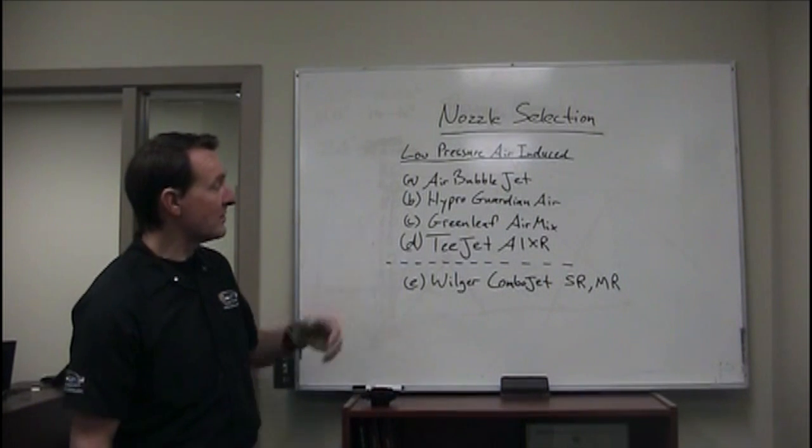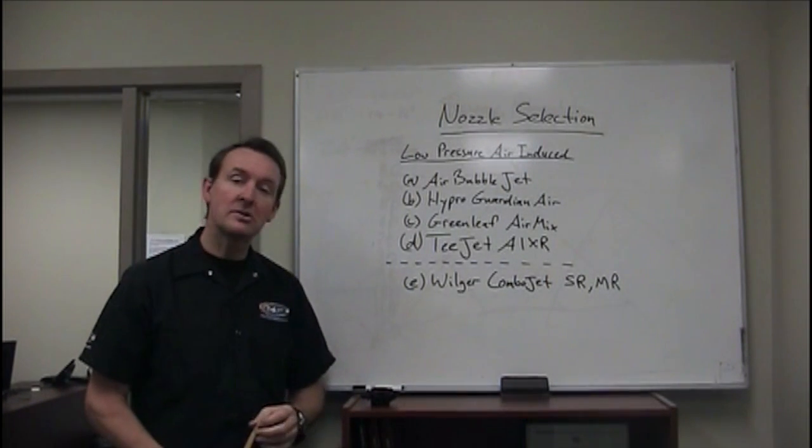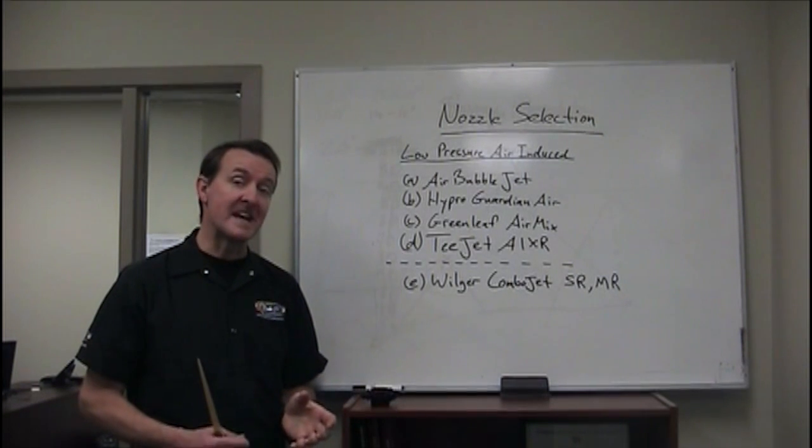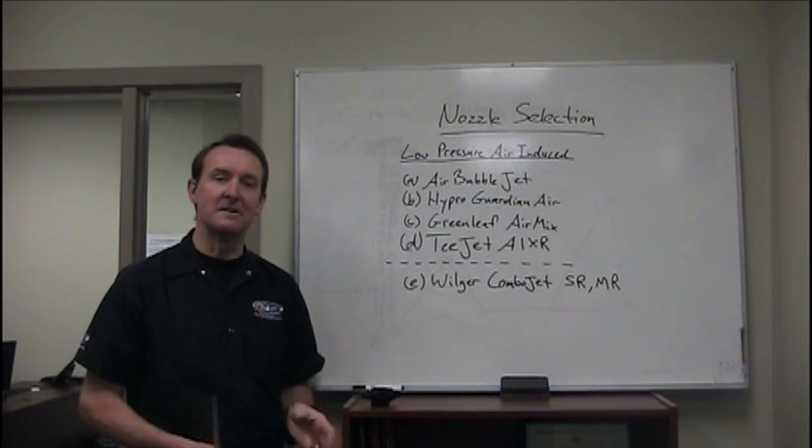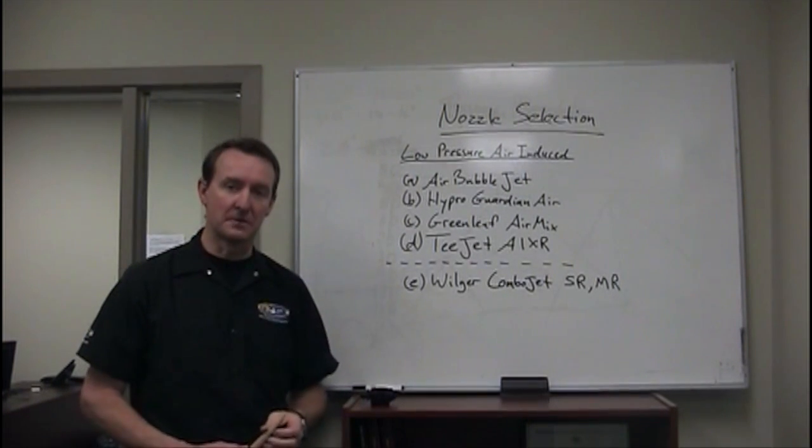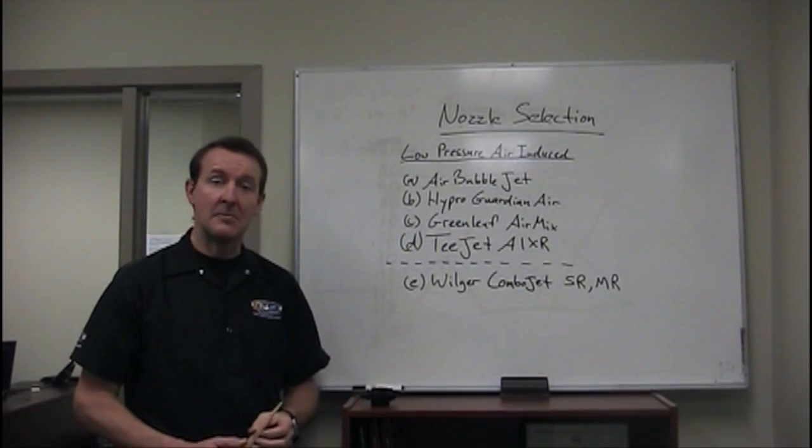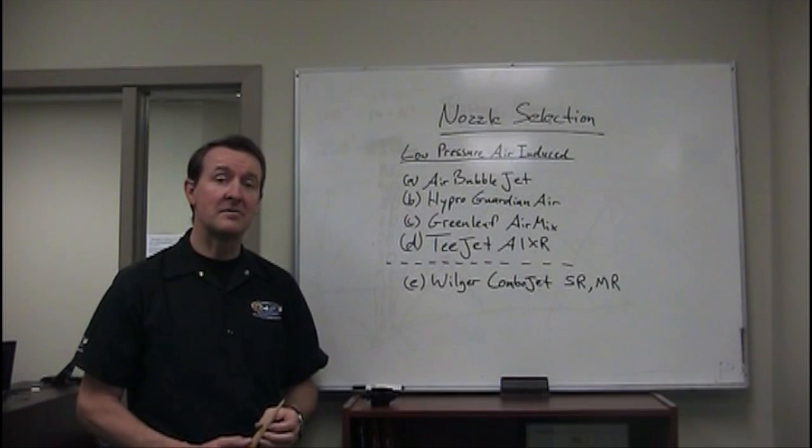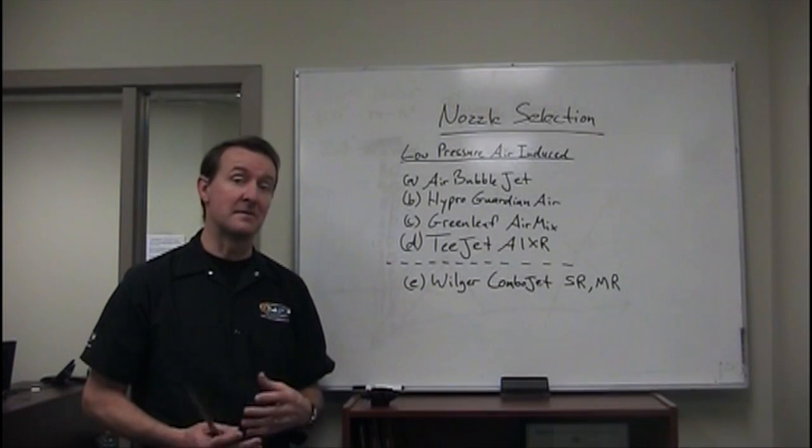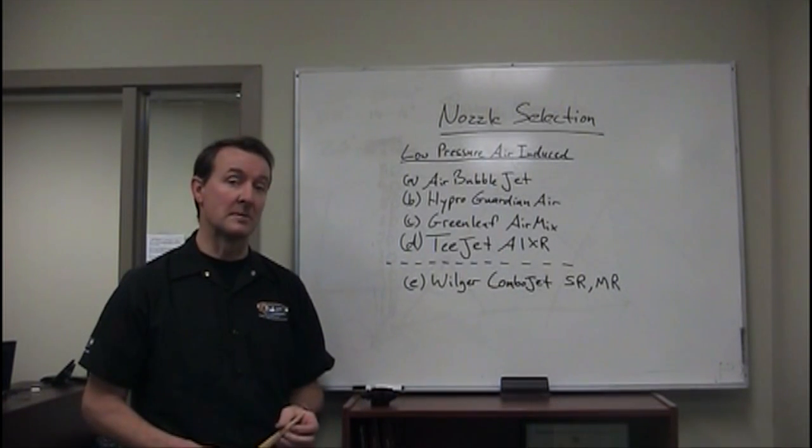T-Jet came on the market with their version, the T-Jet AI XR, which is a little bit finer than their other one, the T-Jet AI. Otherwise very similar. All these nozzles are plastic, all have very good wear characteristics. In Eastern Canada you also have the Hardy Mini Drift, which is not available in the West, same nozzle as the Leckler IDK. Leckler manufactures that for Hardy on a private label arrangement.